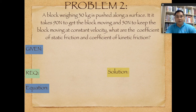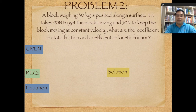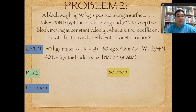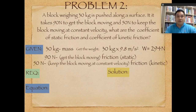Problem number two: A block weighing 30 kilograms is pushed along a surface. It takes 90 newtons to get the block moving and 50 newtons to keep it moving at constant velocity. Given: mass equals 30 kg, weight equals 30 × 9.8 = 294 newtons. The 90 newtons represents the static friction force, and the 50 newtons represents the kinetic friction force.